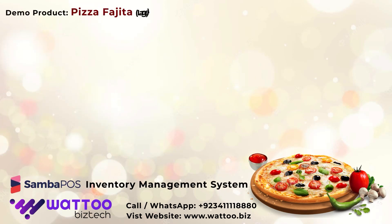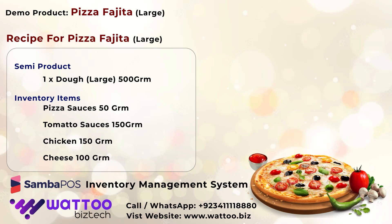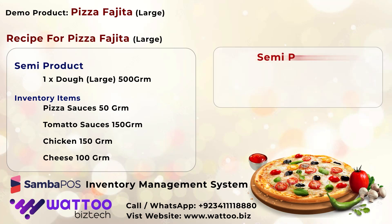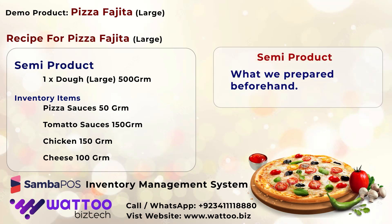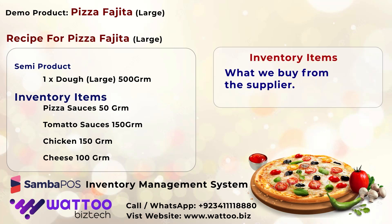Our demo product is pizza. For the production of pizza we need the following items. There are two types of items: semi-products, which are what we prepare beforehand, and inventory items, which are what we buy from the supplier.